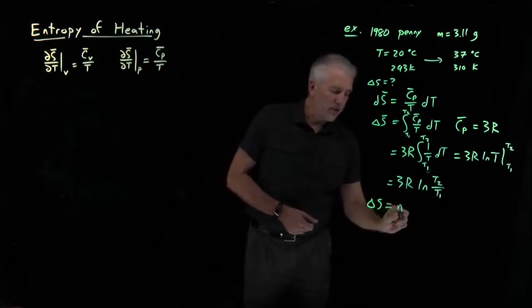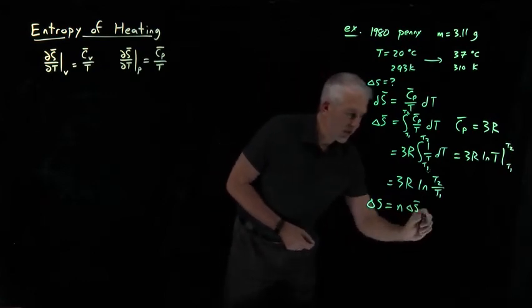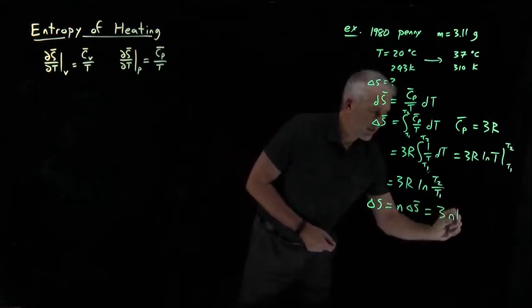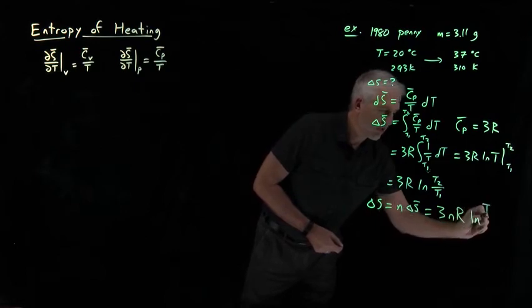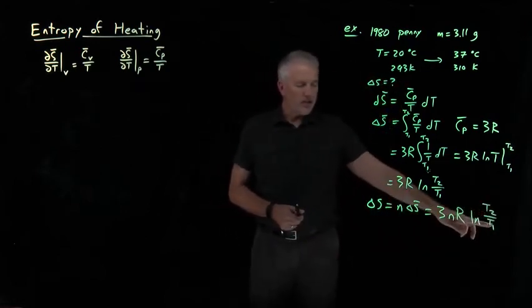So the total change in entropy is going to be the number of moles times the change in entropy per mole. So that would be 3 times n times R, natural log of T2 over T1. Now we have all the numbers that we need to plug into that expression.